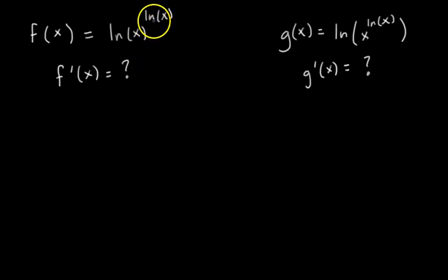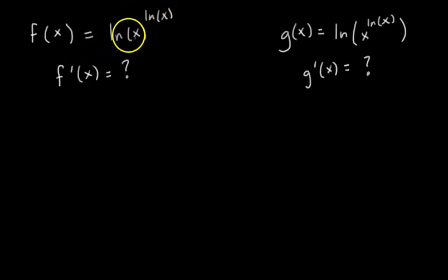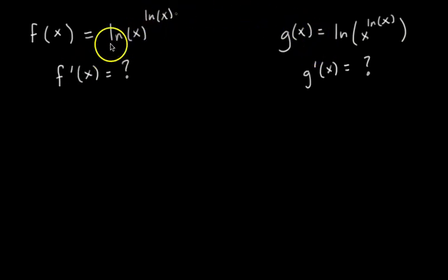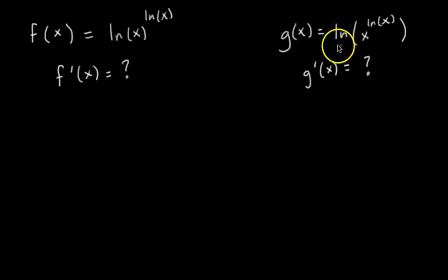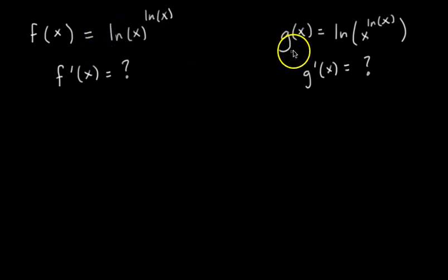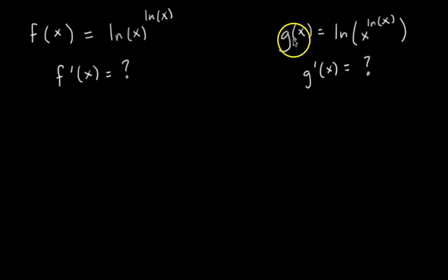What about using the property of logarithms where you take the exponent of the logarithm and bring it down in front, so it would become ln of x times ln of x, and then we could do product rule or chain rule? The problem is that property can only be used in one of these two cases. You're only allowed to bring the exponent down in front using the property of logarithms when the exponent is within the parentheses of the logarithm. So you can only use that for g of x.